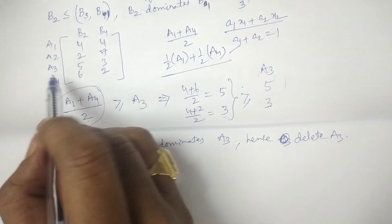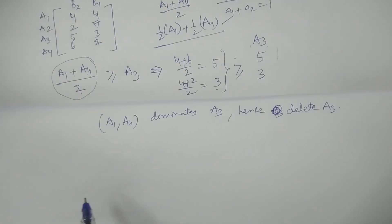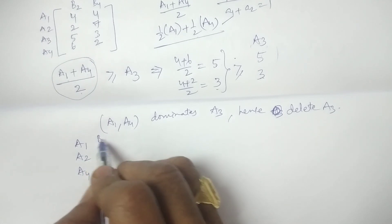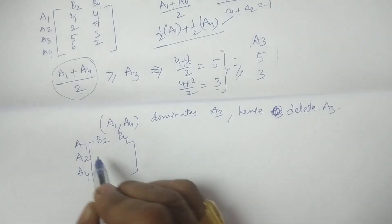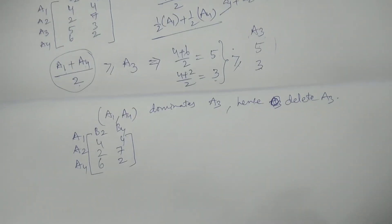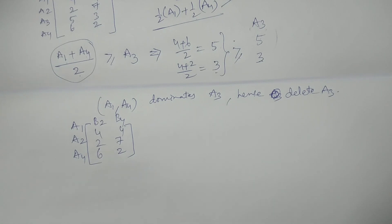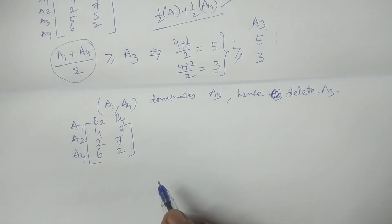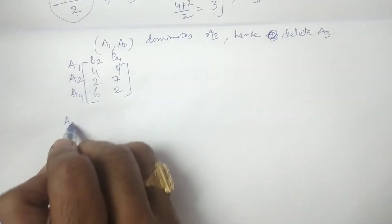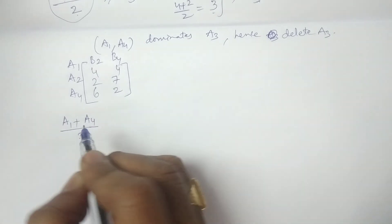After deleting A3, the reduced payoff matrix is: Player A has strategies A1, A2, A4; Player B retains B2 and B4. The matrix values are: A1: 4, 4; A2: 2, 7; A4: 6, 2. Since we are not able to compare directly — the same strategies carry over — we again apply the modified dominance principle. I consider A1 and A4, so (A1 + A4) / 2.